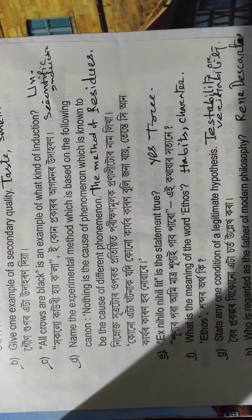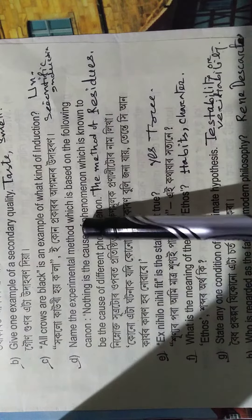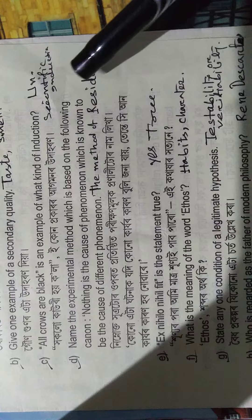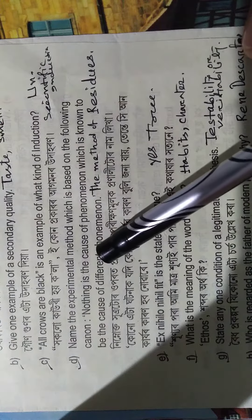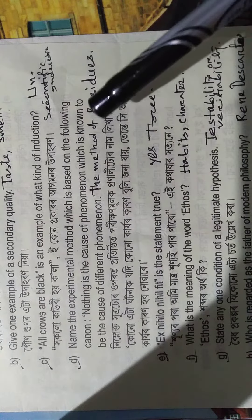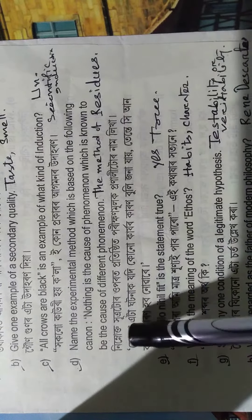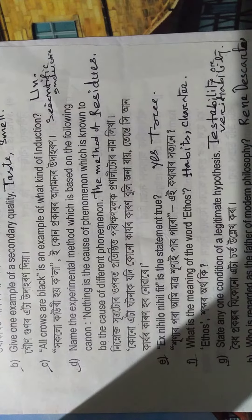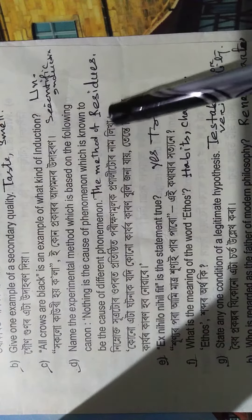Question D: Name the experimental method which is based on the following canon: nothing is the cause of a phenomenon which is known to be the cause of different phenomenon. The answer is method of residues.